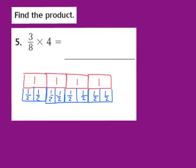Now our next step is to go back to our fraction and look at the numerator. My numerator is a 3, so what that means is I'm now going to circle 3 of those 1 half pieces. So we circle 1, 2, 3 of those halves. What that tells me is my answer turns out to be 3 halves, or 3 over 2.